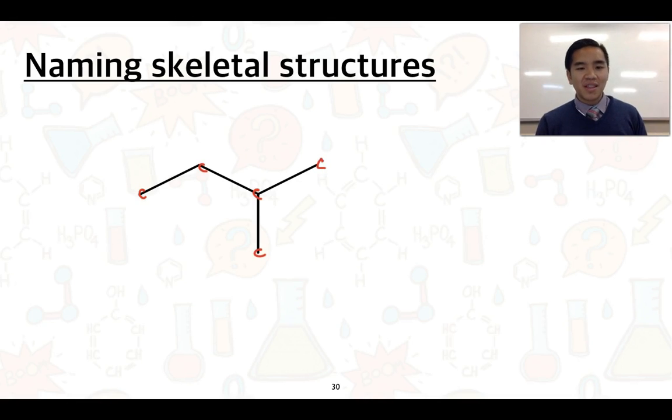We can see that there are up to four carbon atoms in the longest chain. This is going to be called a butane, bute meaning four carbon atoms, and ane being an alkane.